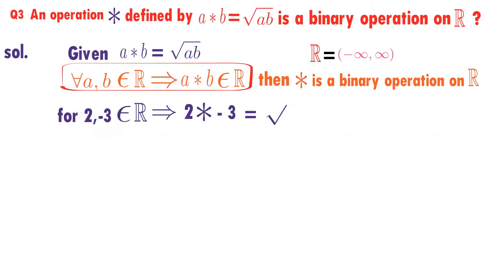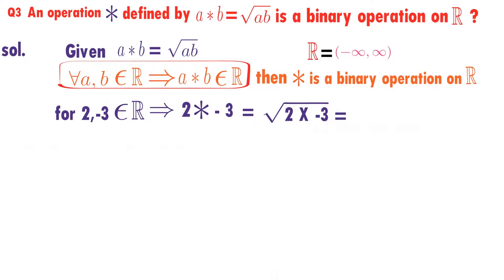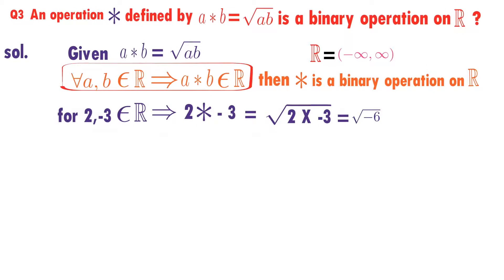What is 2 star minus 3? How is it defined? Root over 2 into minus 3. What is root over 2 into minus 3? That equals root over minus 6.